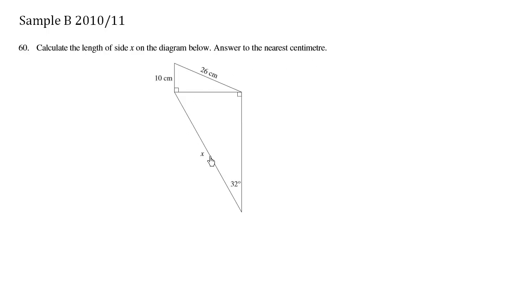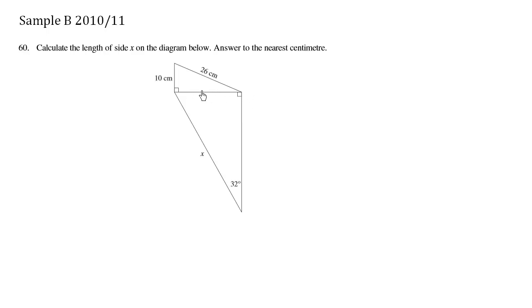So let's solve for x. We have an angle here, but we need some more information for this right angle triangle. We need to solve for this side first. If we can solve for this side, we can use some basic trig. I'm just going to call this length a.